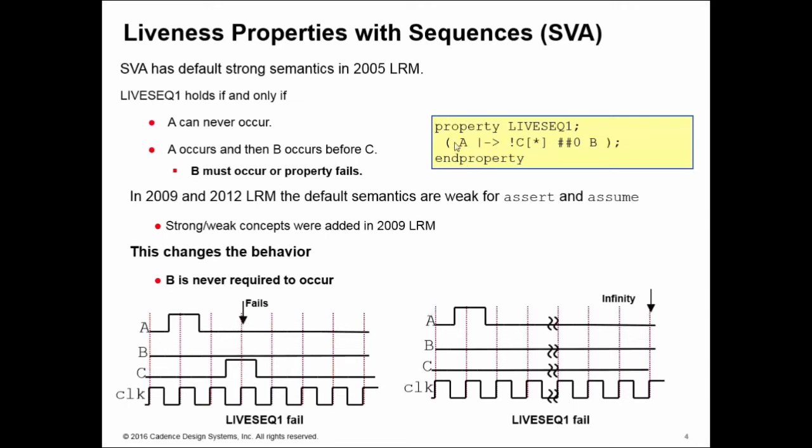The other way in which you can fail is if A occurs and C stays zero forever, but B never occurs. We only know this at infinity, which simulation can't do, but formal can. So here's another counterexample. That would be the counterexample you see in formal if it was never possible for B to occur, but C did stay low.